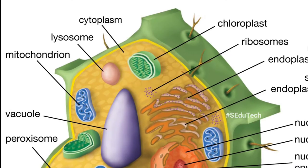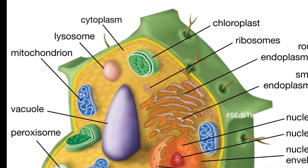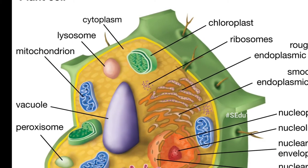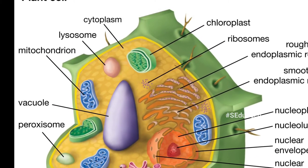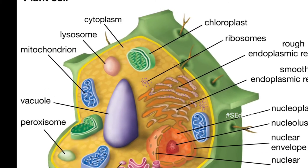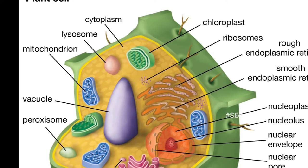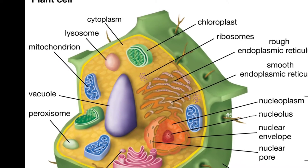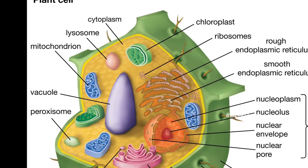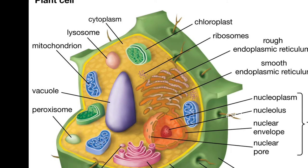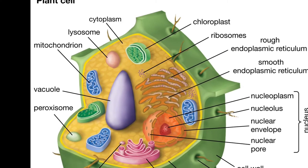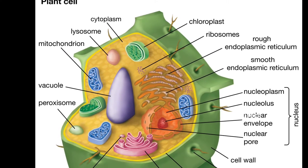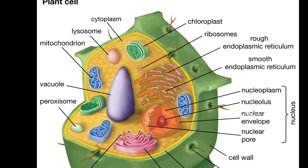Our third part is cytoplasm. The cytoplasm is a thick aqueous, which means water-based, solution in which the organelles are found. Substances such as salts, nutrients, minerals, and enzymes — which are molecules involved in metabolism — are dissolved in the cytoplasm.